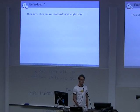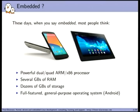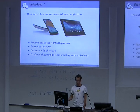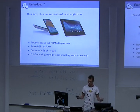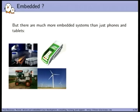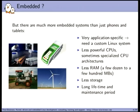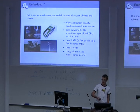When people say 'embedded' these days, they usually think of phones, tablets, and consumer-grade devices — things with powerful CPUs, lots of RAM and storage, and a full-featured general-purpose OS like Android. But embedded is much more than devices in your pocket. We have embedded systems in laser cutting machines, point-of-sale terminals, agriculture machines, windmills, and many other systems. Those systems are more application-specific and may need to boot fast, meet real-time deadlines, or have other constraints.